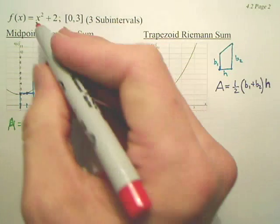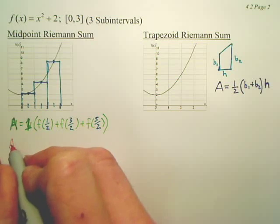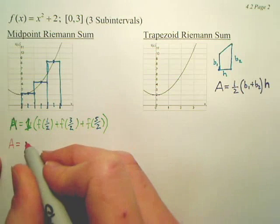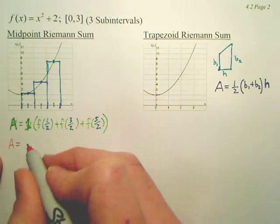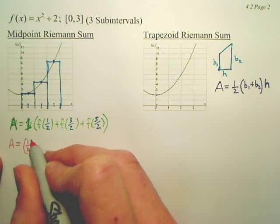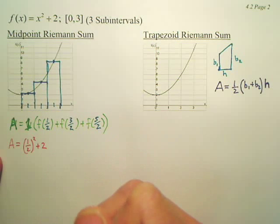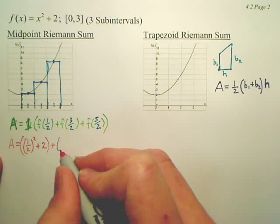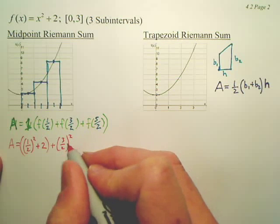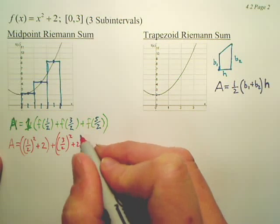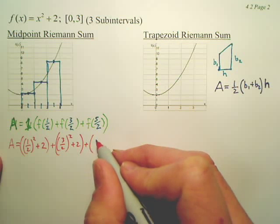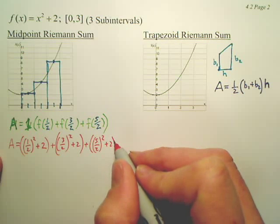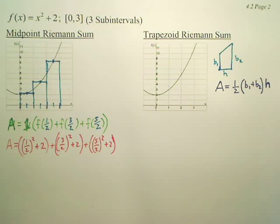So we have to go to the formula now. The area is going to be, can I drop the 1? Since it's 1, it's pretty simple. We're going to do f of 1 half, means 1 half squared plus 2. And then we have plus 3 over 2 squared, plus 2, plus 5 over 2 squared, plus 2.